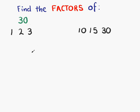What about 4? Does 4 go into 30? No, 4 doesn't go into 30. Next one we can try is 5. Does 5 go into 30? It does. 5 goes into 30 6 times. So these two are also a pair of factors.